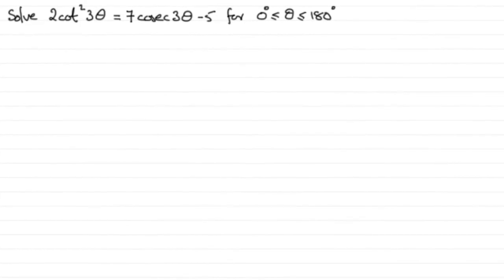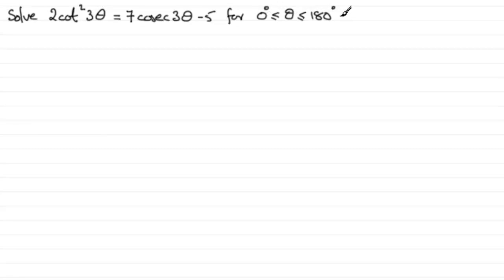For this question we're asked to solve 2cot²(3θ) = 7cosec(3θ) - 5, for θ greater than or equal to 0 degrees but less than or equal to 180 degrees.